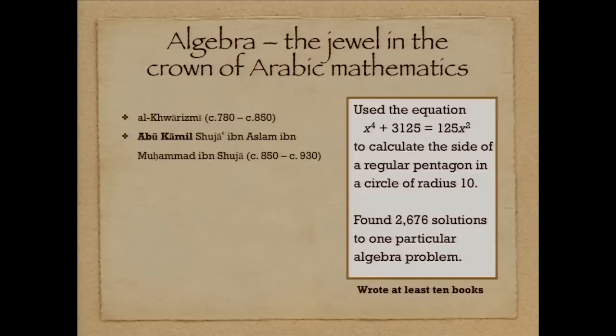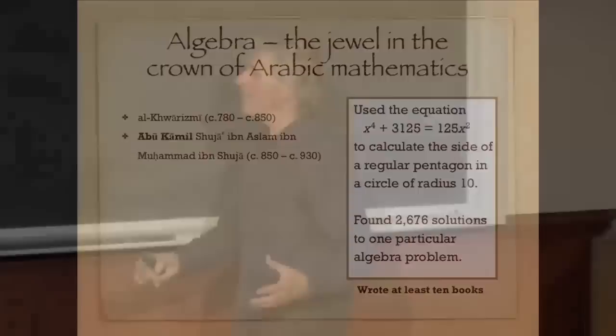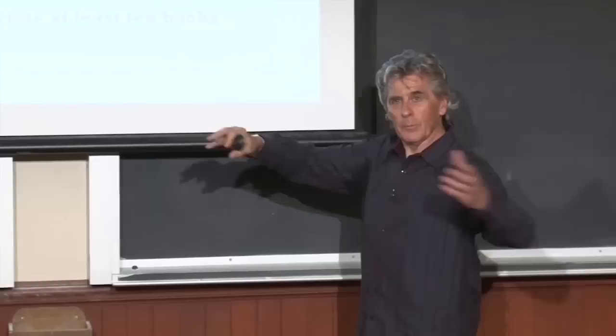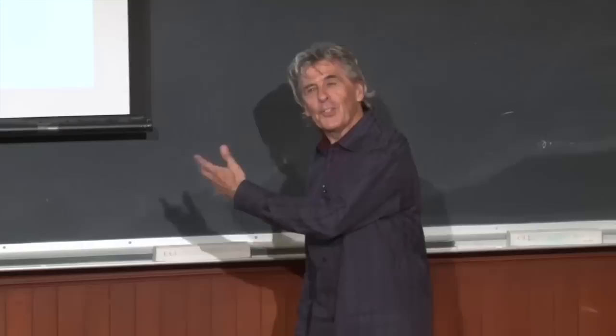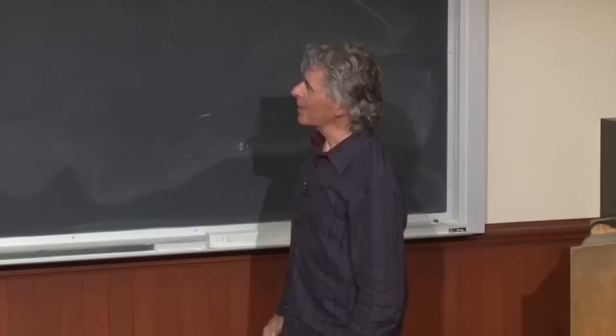The next major figure, almost immediately afterwards, was Abu Kamil — a guy who wrote many books, at least ten of which we know, did a whole bunch of things, a remarkable individual. He actually used that equation to calculate the side of a regular pentagon — a really remarkable piece of work. The guy was so amazing and obsessive that in one case, he looked at many indeterminate problems — problems where there's not a unique solution but many solutions — and actually went through and found 2,676 solutions by hand calculation. There were fewer distractions then. Even so, that's pretty remarkable.